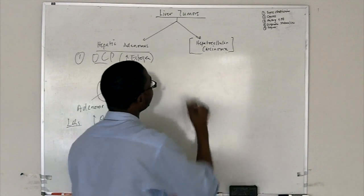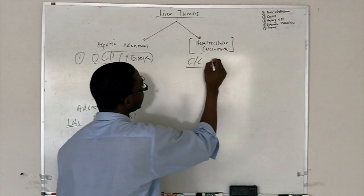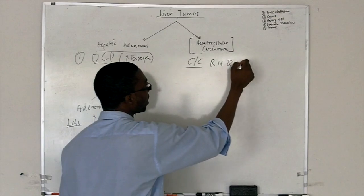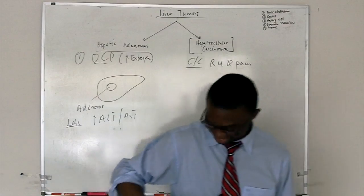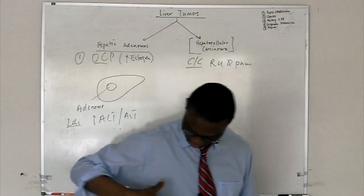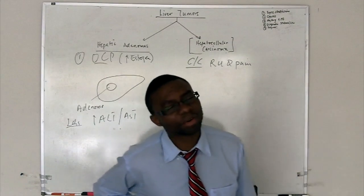So what are these patients are going to be complaining of? Right upper quadrant pain. Why are they complaining about right upper quadrant pain? Because the liver is sitting on the right side. It makes perfect sense. The liver is sitting right there. So they come and right upper quadrant pain.